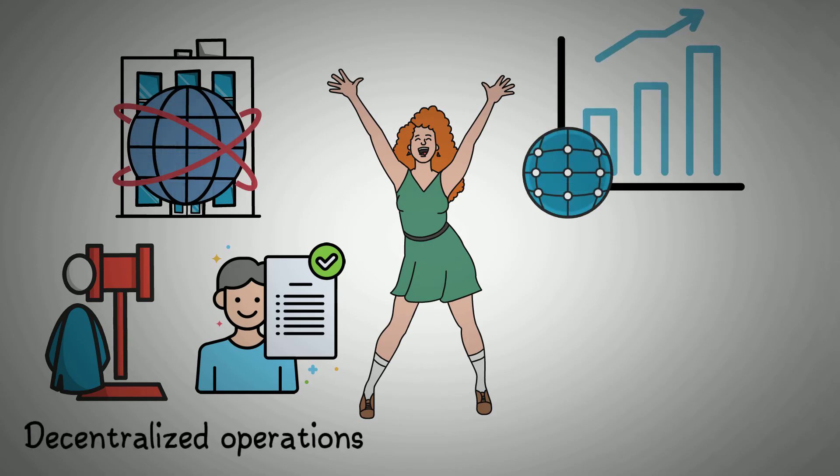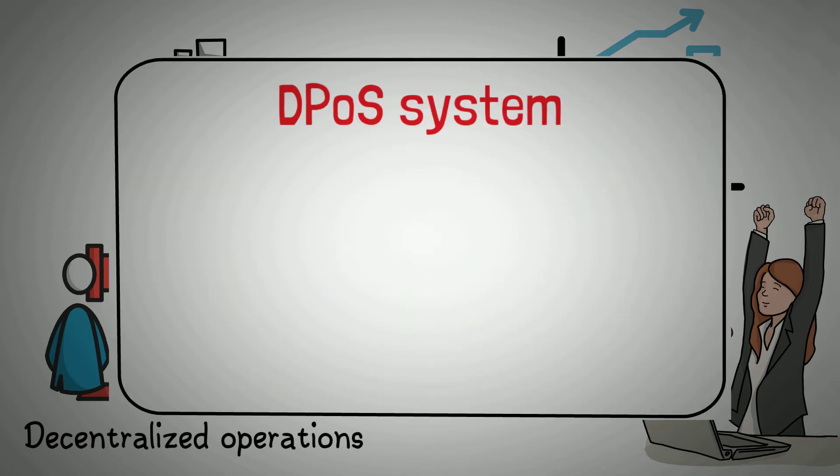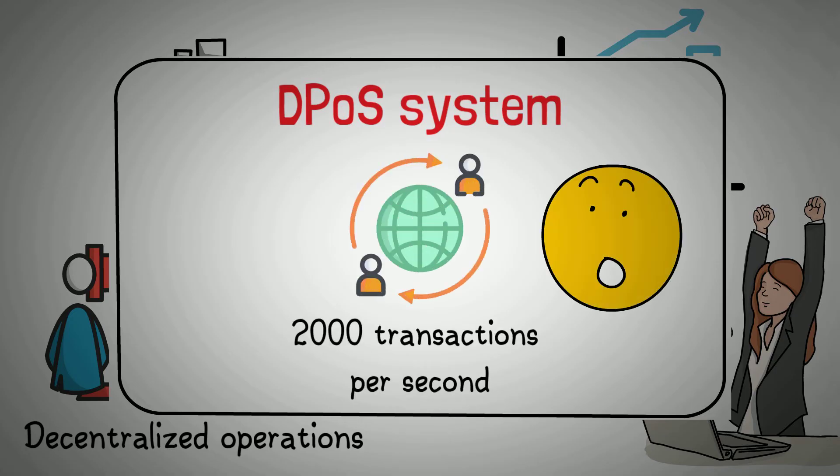Also, the network is scalable, providing users with instant block finality and settlement of trade transactions. With its DPoS system, the network is able to achieve up to 2,000 transactions per second, which is highly impressive.